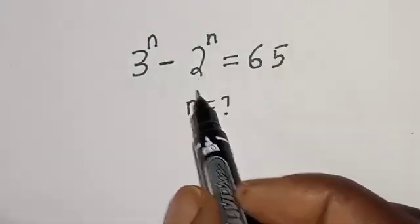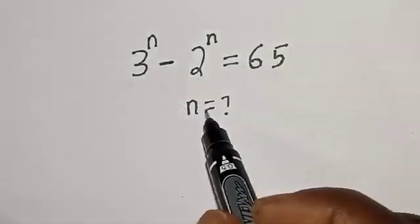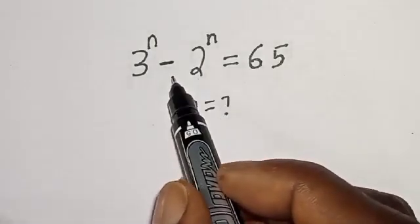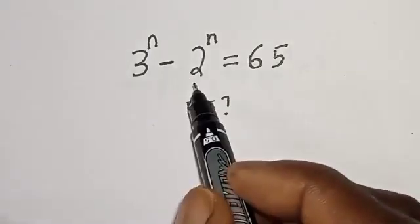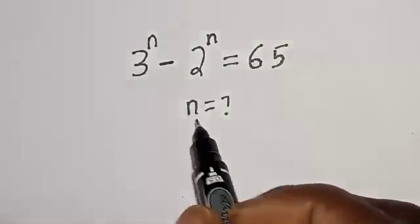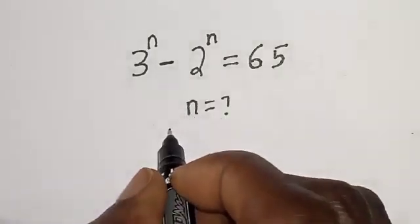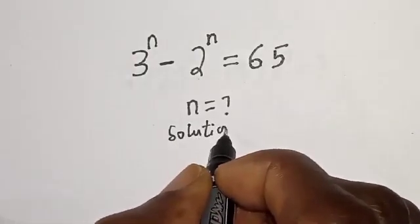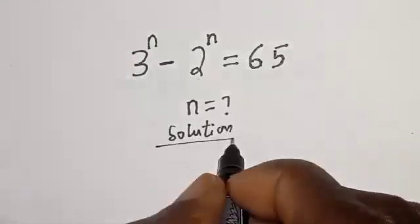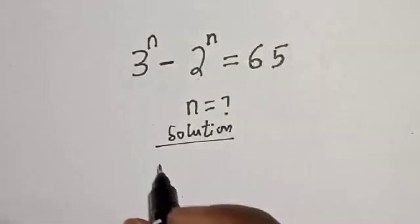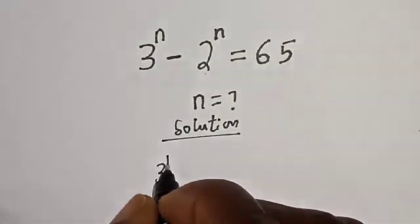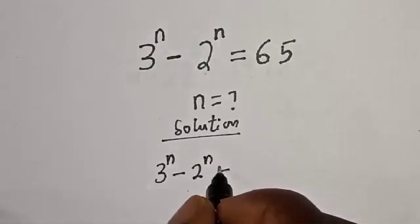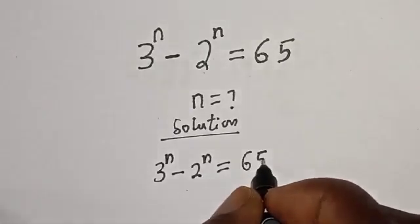Hi everyone, welcome to my class. In this class we quickly want to find the value of n from this nice Math Olympiad question. Please don't forget to like, share, comment and subscribe. We have the given question: 3 raised to power n minus 2 raised to power n is equal to 65.